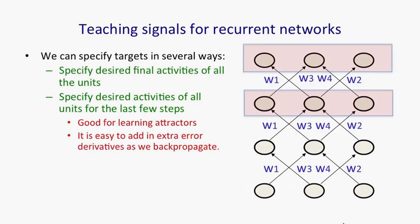And it's quite easy as we backpropagate to add in derivatives that we get from each time step. So the backpropagation starts at the top with the derivatives for the final time step. And then as we go back through the layer before the top, we add in the derivatives for that layer, and so on. So it's really very little extra effort to have derivatives at many different layers.